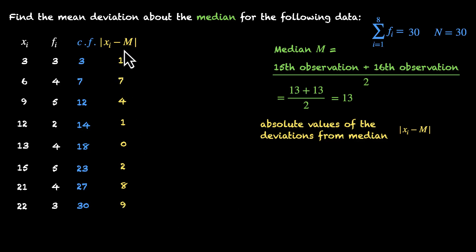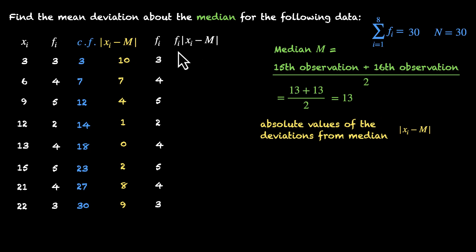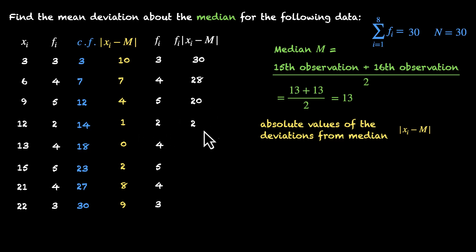Since 3 appears 3 times and 6 appears 4 times, these deviations also appear those many times. So we add another column: fi × |xi − m|. Repeating the frequencies — 3, 4, 5, 2, 4, 5, 4, 3 — and multiplying: 10×3=30, 7×4=28, 4×5=20, 1×2=2, 0×4=0, 2×5=10, 8×4=32, and 9×3=27.